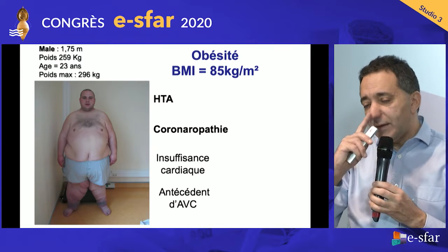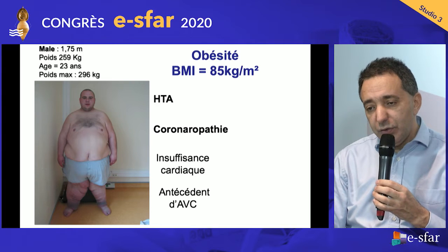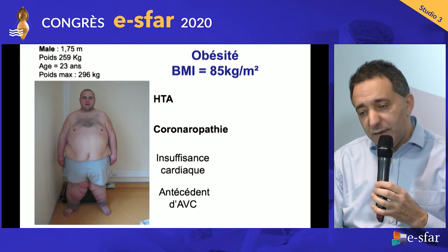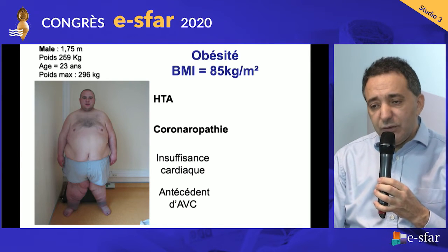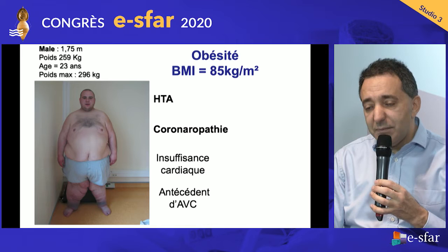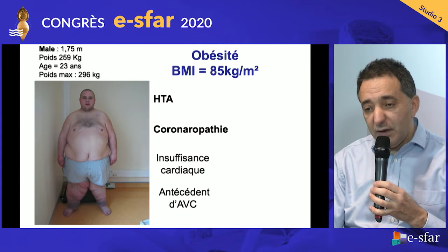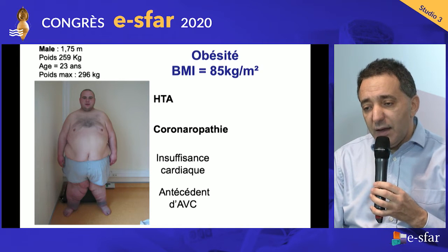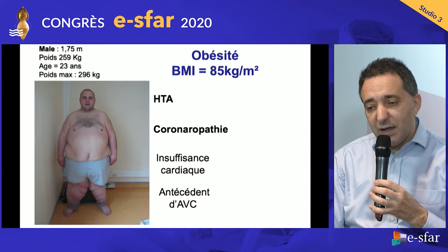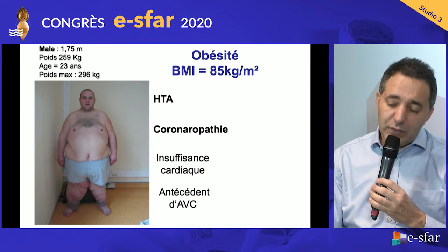This is a classical patient who allowed us to show his photo. This patient has a BMI of 85 kg/m². My main message for this young patient — 23 years old — is that he already has arterial hypertension, coronary artery disease, cardiac dysfunction, and gastrointestinal issues.